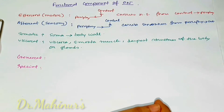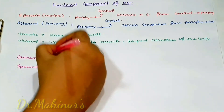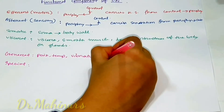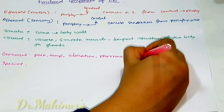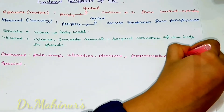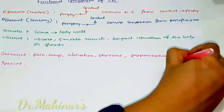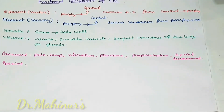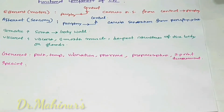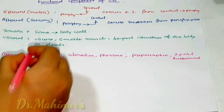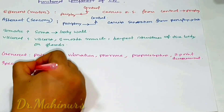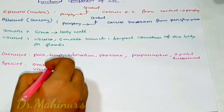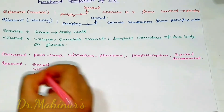Then we have general and special. General is when a nerve fiber carries general sensations — sensations like pain, temperature, vibration, pressure, touch, proprioception, and two-point discrimination. When a cranial nerve fiber carries these general sensations, we say that cranial nerve has a general component. The special sensations are smell, vision, balance, taste, and hearing.